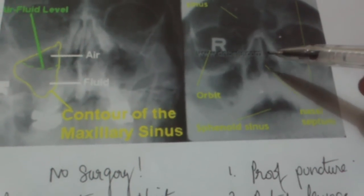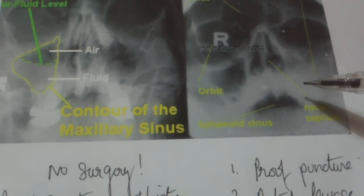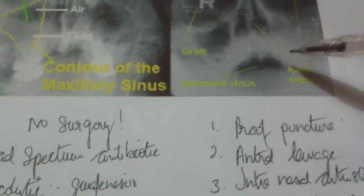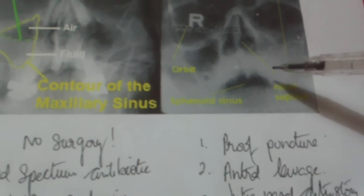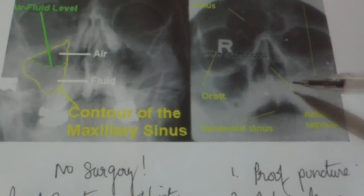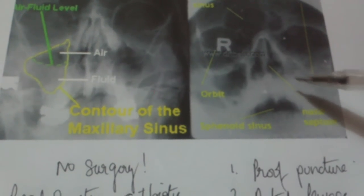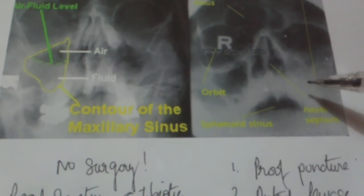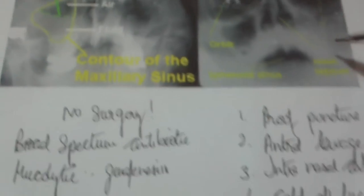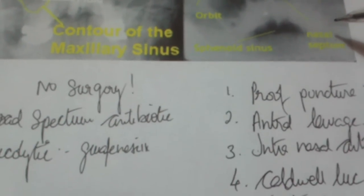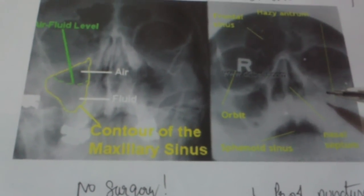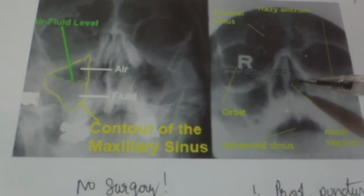If the patient continues to have disease, a small window is created in the inferior meatus, and that is called an intranasal antrostomy. We believed earlier that the antrum could drain via gravity, and if this did not resolve the disease, then finally the contents are cleared by a radical surgery called the Caldwell-Luc procedure.